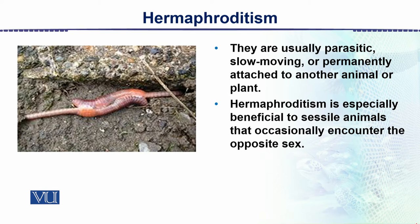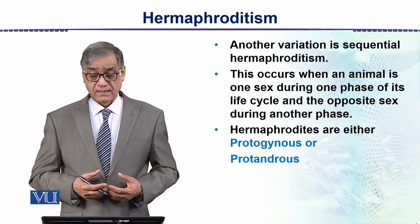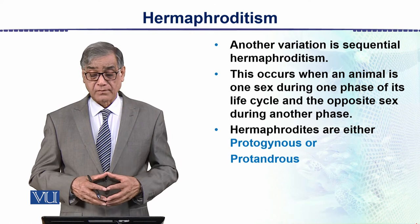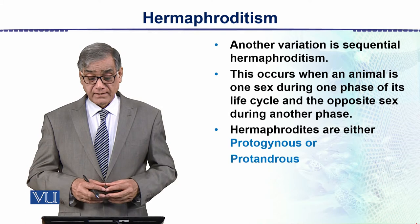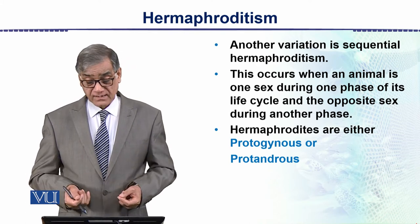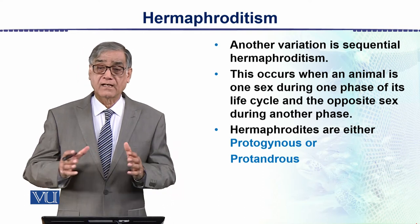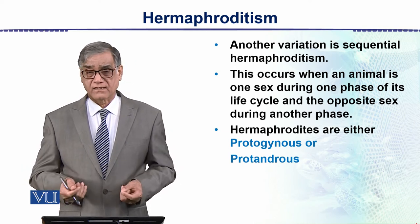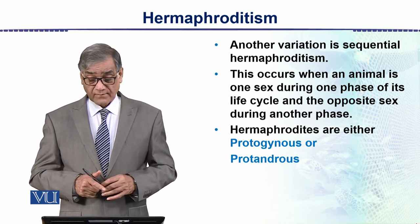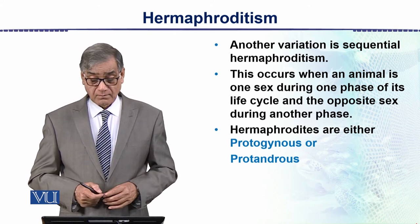Another variation in hermaphroditism is sequential hermaphroditism. This occurs when an animal is one sex during one phase of the life cycle and the opposite sex during another phase. The early conditions can be one sex, and later they change their sex. Hermaphrodites are either protogynous or protandrous.